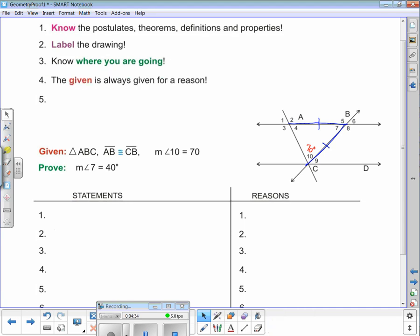Next tip: the given is always given for a reason. So how do you start your proof? Of course with the given statement. I labeled, it's already done, and you always write 'given.' Now the given is always given for a reason. There's a reason they told us that line segment AB is congruent to line segment CB.